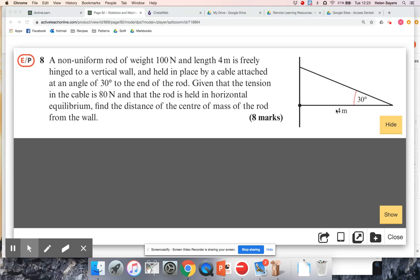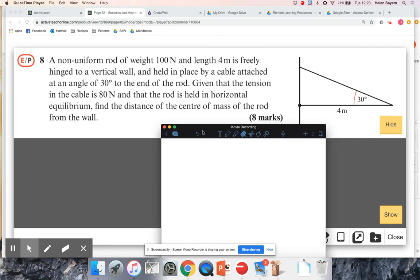I've got a non-uniform rod. I'm given its weight, so if it's non-uniform I don't know where its mass is working. It's four meters long and it's hinged. This is the rod here, it's hinged at the wall there and it's attached by a cable at 30 degrees, and I'm told the tension in the cable.